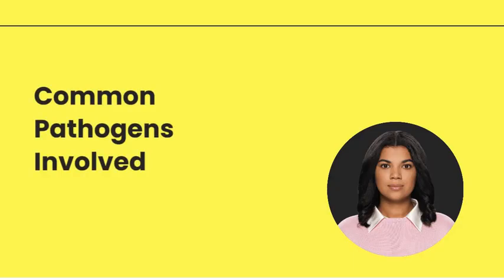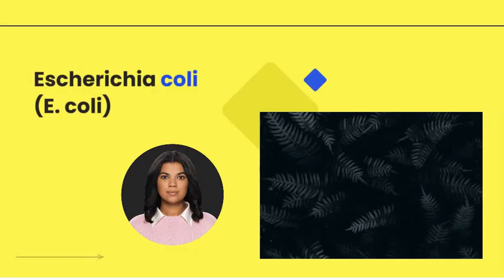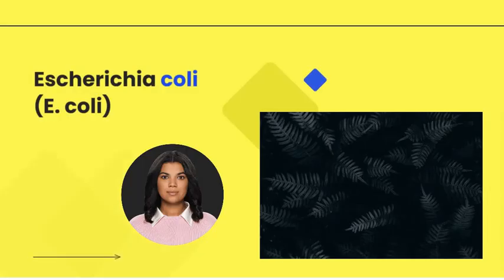Common Pathogens Involved. The primary culprits in CAUTIs are bacteria from the patient's own body, which find their way into the urinary tract. The most common bacteria include Escherichia coli (E. coli). This bacterium is part of the normal flora of the gut but can cause serious infections when it enters the urinary tract.